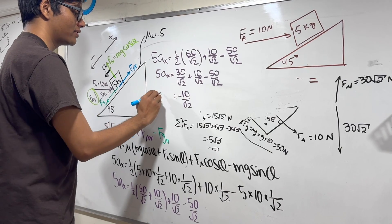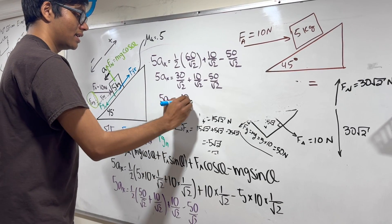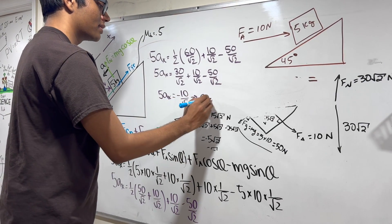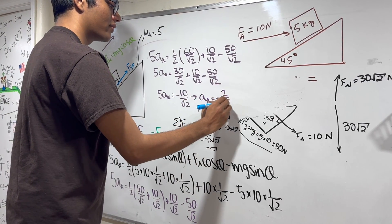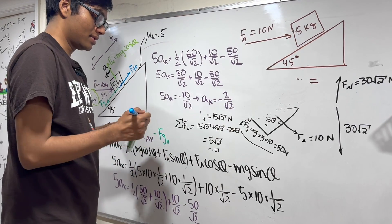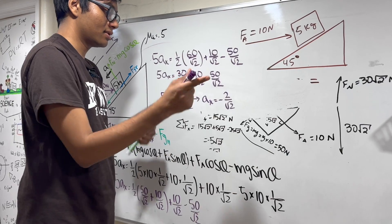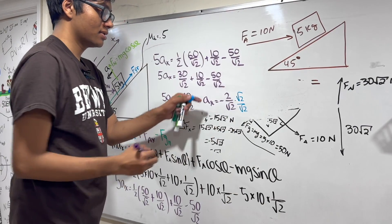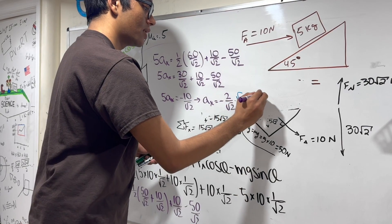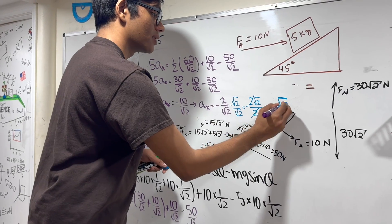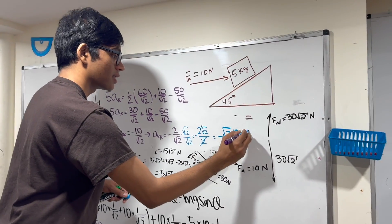Now all we have to do is solve for the acceleration. The acceleration is minus 2 over the square root of 2. Let's rationalize this one. This will give you minus 2 root 2 over 2, which is minus root 2 meters per second squared. The minus sign means that the box is accelerating downward.